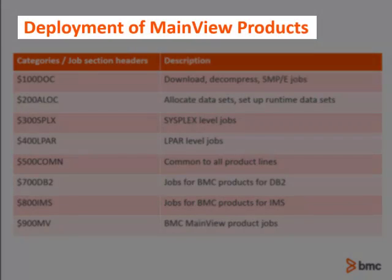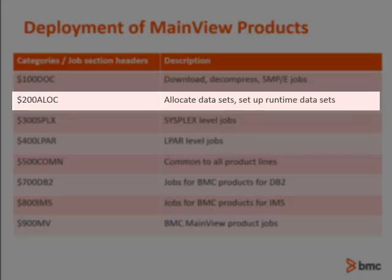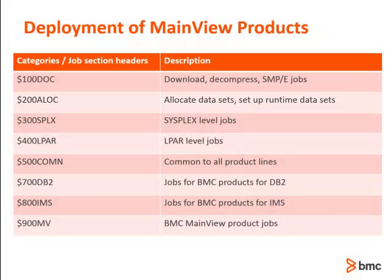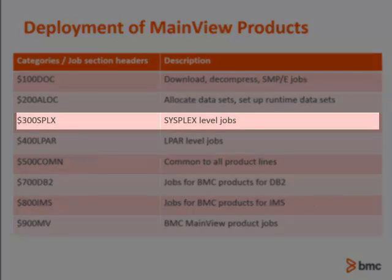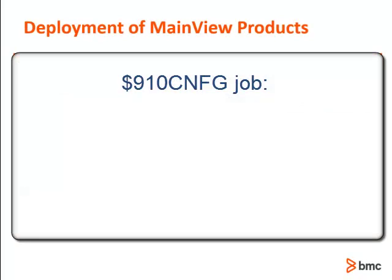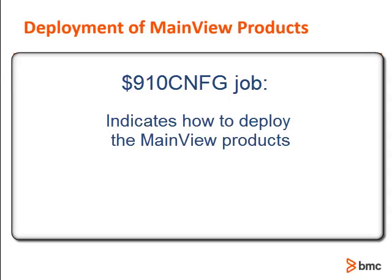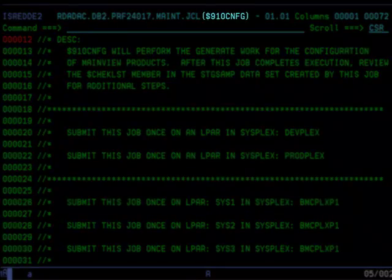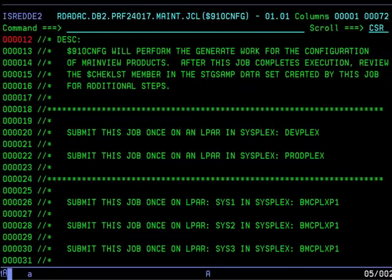When deploying MainView products, if you need to create new runtime datasets, you should start with the $200 series jobs. Similarly, if you are deploying to another SysPlex, you would start with the $300 series of jobs, or if deploying to another LPAR in the same SysPlex, you would start with the $400 series jobs. At the product level, the generated $910 CNFG job indicates how to deploy the MainView products based on decisions you made about the system or SysPlex in the configuration panels for the MainView products. The $910 CNFG job's comments section provides details on which systems and SysPlexes to execute this job.